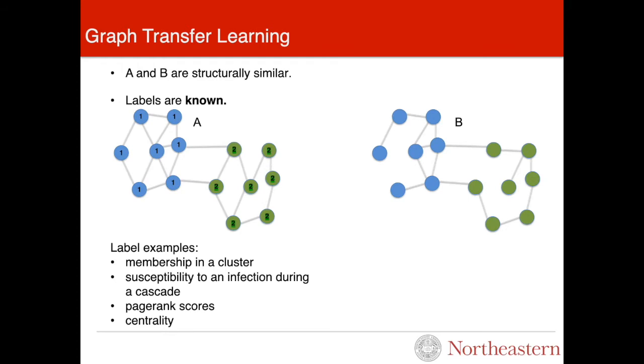We know the labels on Graph A. These labels can be, for example, membership in a cluster, susceptibility to an infection during a cascade, page rank scores, or centrality.